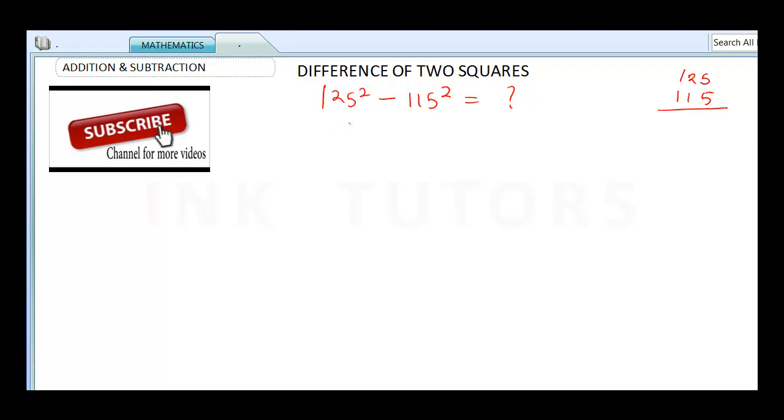It's actually called the difference of two squares, where you get to apply a rule which looks like this: A square minus B square is going to be A plus B multiplied by A minus B.